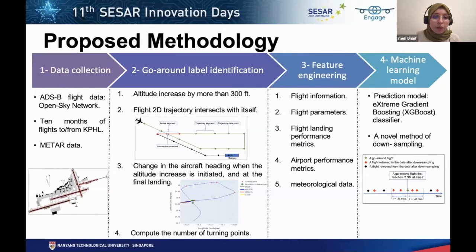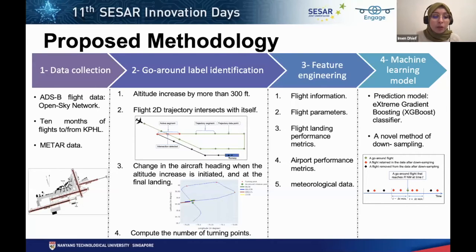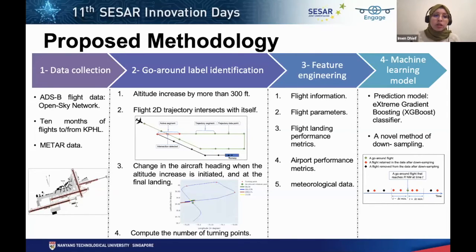There are four main steps in our algorithm. The first is data collection: we use ADS-B flight data from the OpenSky Network, covering 10 months of flights arriving at and departing from KPHL — Philadelphia International Airport — chosen because it records one of the highest numbers of go-arounds in the world. For meteorological data, we use METAR reports from the KPHL station.